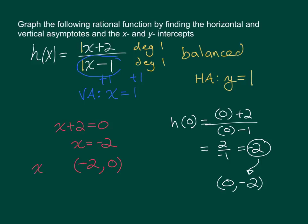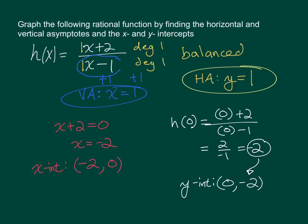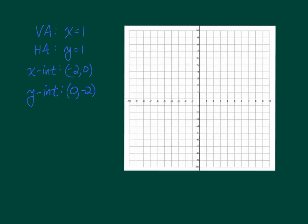We have an x-intercept shown in red, a y-intercept shown in white, a vertical asymptote shown in blue, and a horizontal asymptote shown in yellow. This slide has all of the pertinent information: the vertical and horizontal asymptotes and the x and y-intercepts.